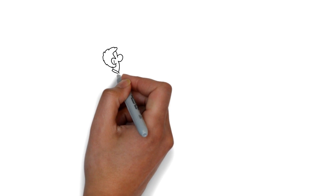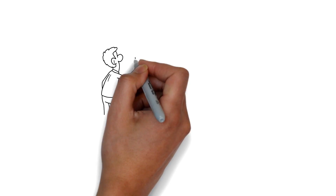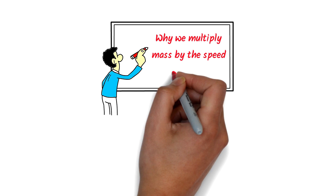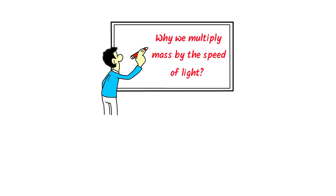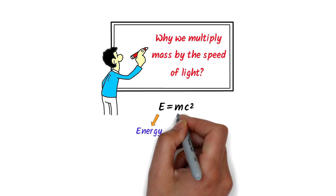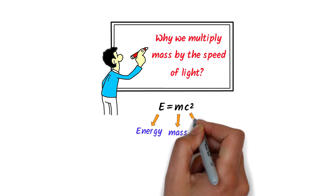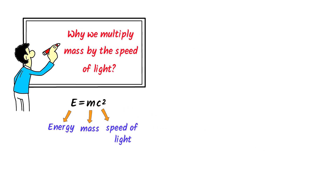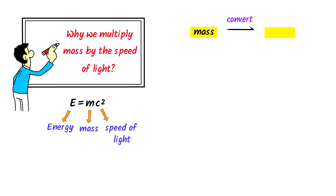Let me teach you one of the most important questions which a lot of students are not understanding: why we multiply the mass by the speed of light? We all know that in this equation, E is the energy, m is the mass, and c is the speed of light. At basic level, we say that mass can be converted to energy, and energy can be converted to mass.